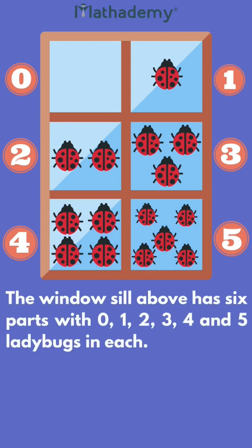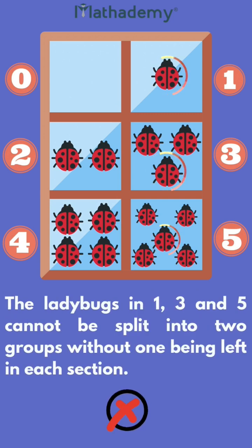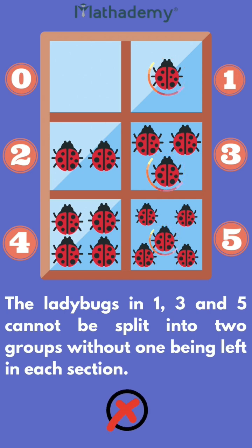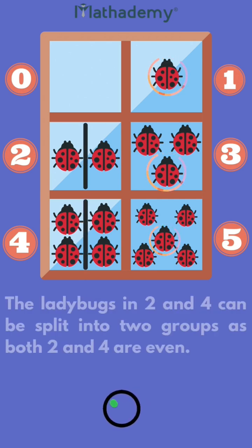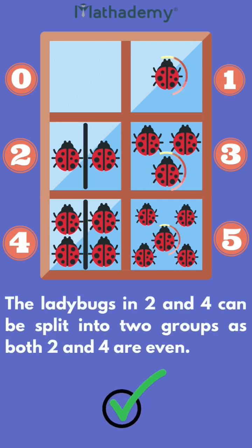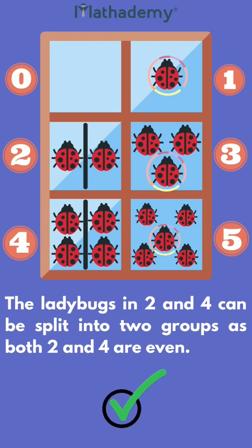The windowsill shown has six sections with 0, 1, 2, 3, 4, and 5 ladybugs. The ladybugs in sections 1, 3, and 5 cannot be split into two equal groups without one being left over in each section. The ladybugs in sections 2 and 4 can be split into two equal groups, as both 2 and 4 are even.